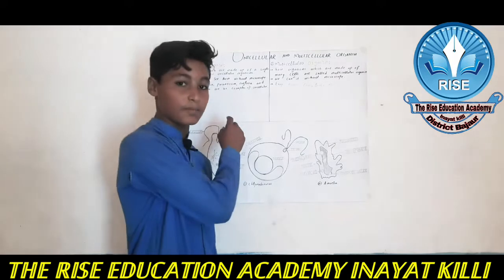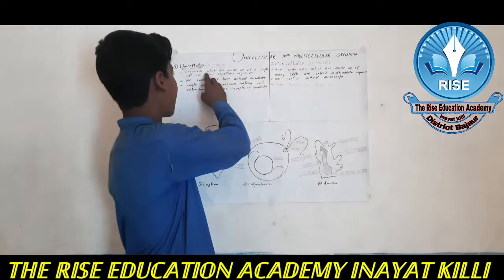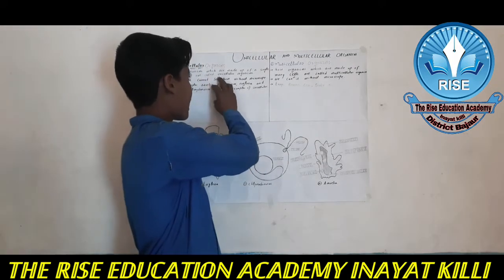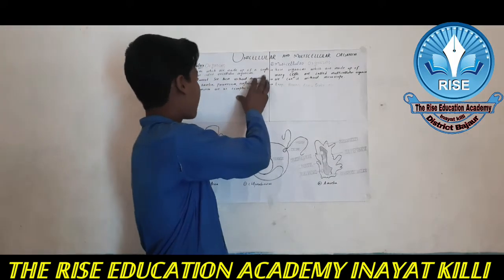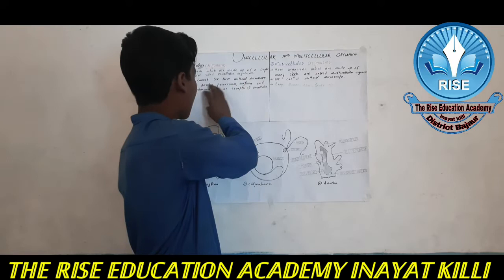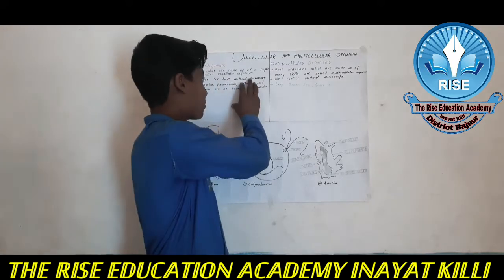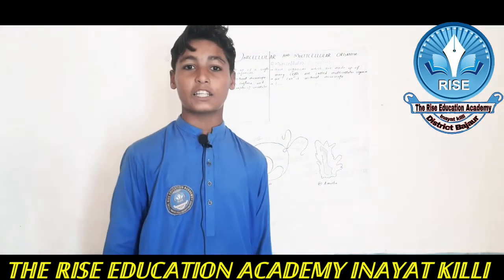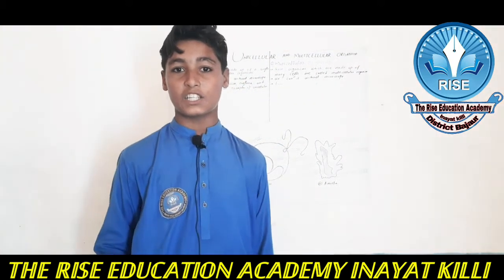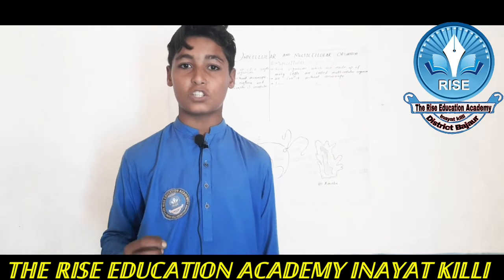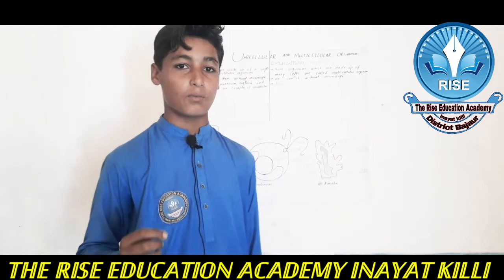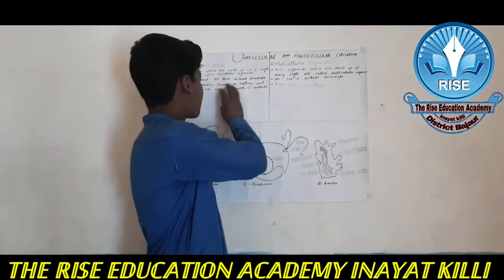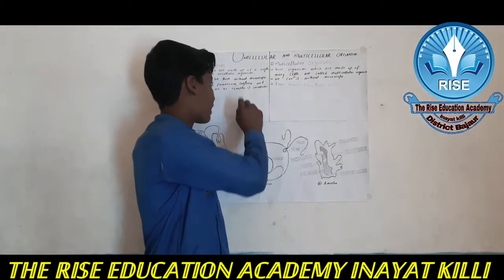Number 1 is unicellular organism. Organisms which are made up of a single cell are called unicellular organisms. We cannot see them without a microscope.